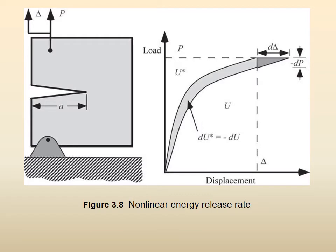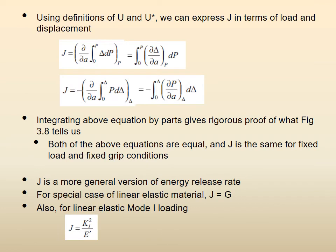We showed you the compact specimen with crack size A, load P, and displacement or opening delta. Then you plot load against displacement and you get the curve as we have done earlier. You take this small infinitesimal area d delta into dP. We discussed and then based on that we defined how J will be calculated.